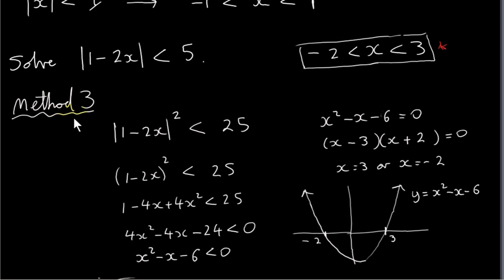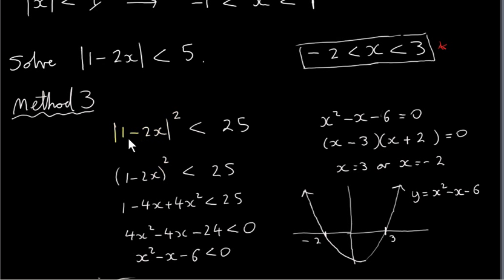Here is yet another method for doing modulus inequalities — one that you will have to use for certain examples. What you do is square both sides. If we square the modulus of one minus two x, that's the same as just squaring one minus two x, because squaring makes something positive. So whether we take the modulus first and then square, or simply square it, it doesn't matter — we'll get the same answer.